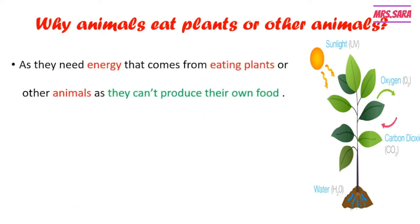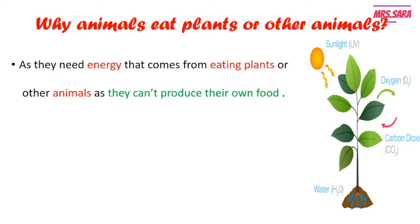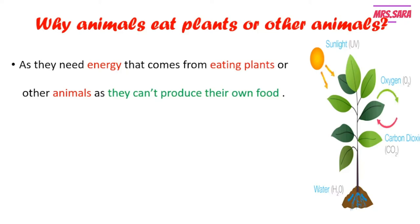Plants can make their own food, but animals can't produce their own food. So animals need to get energy by eating plants or other animals.